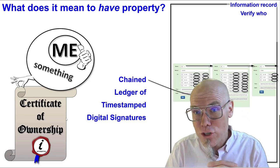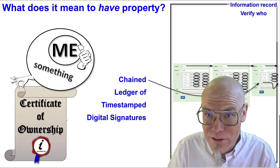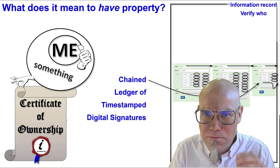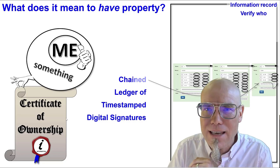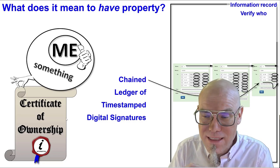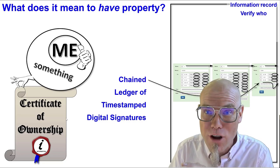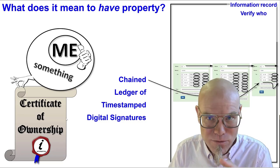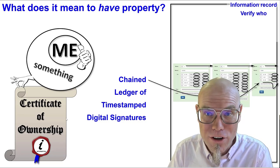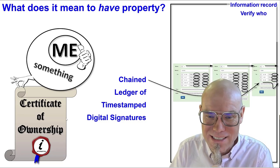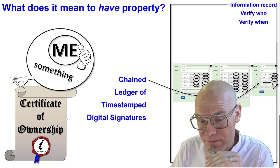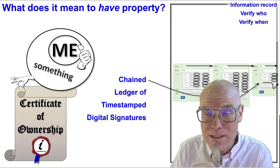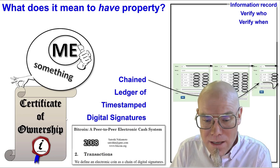And we actually chain them together — that's where the blockchain comes from, and that has amazing properties. The chained timestamps are the verification of when.